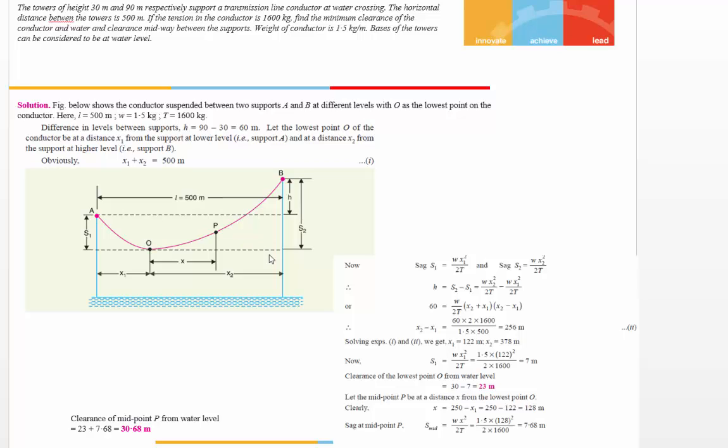The weight of the conductor is 1.5 kg per meter. The bases of the two towers are considered to be at water level, so we're assuming these two bases are at the same level.